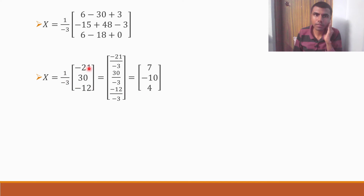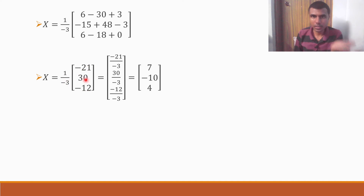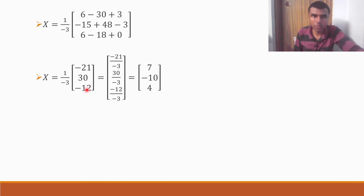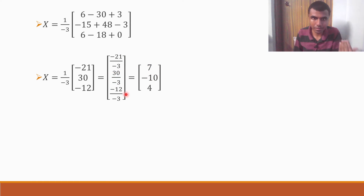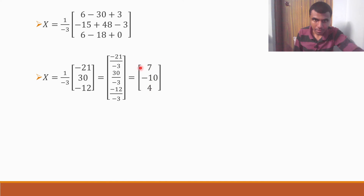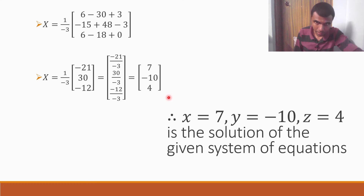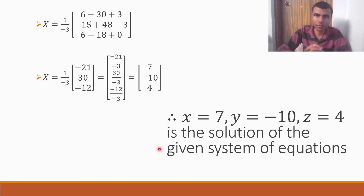So we get (1/−3) × [−21; 30; −12]. Multiplying: −21/−3 = 7; 30/−3 = −10; −12/−3 = 4. Therefore x = 7, y = −10, and z = 4 is the solution of the given system of equations.